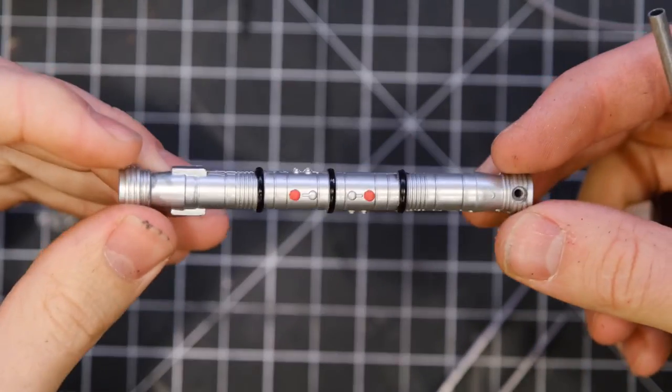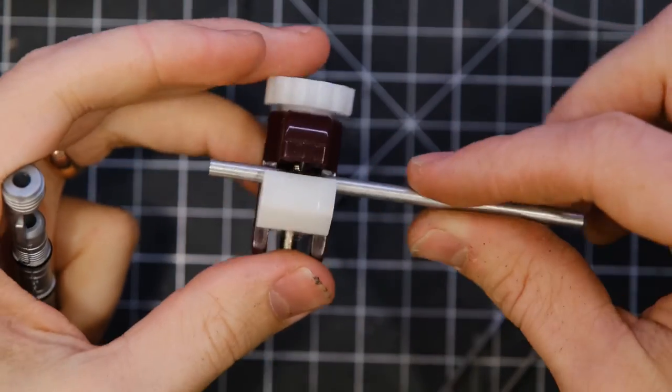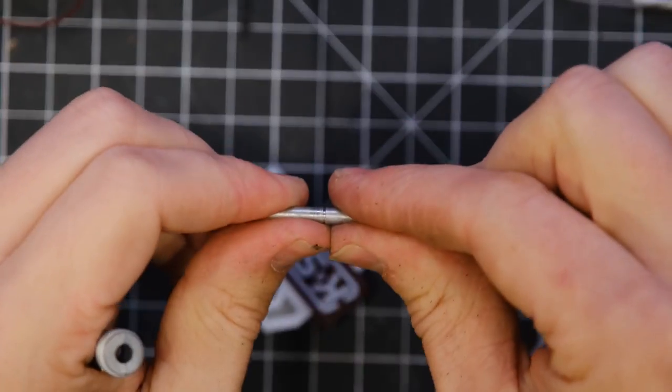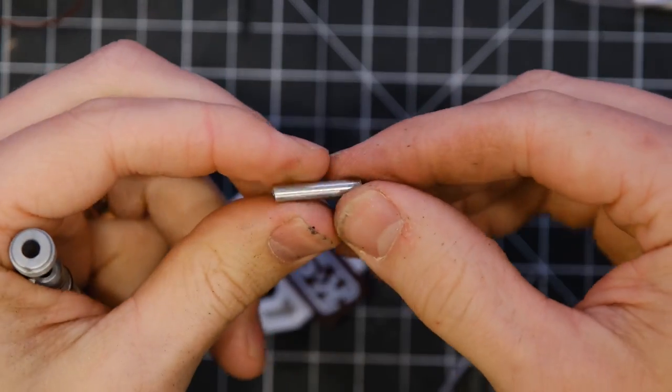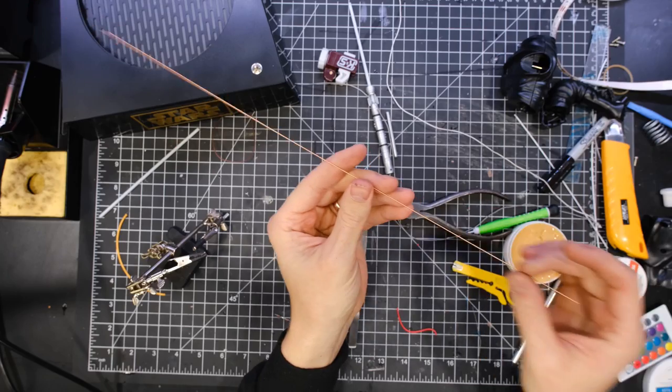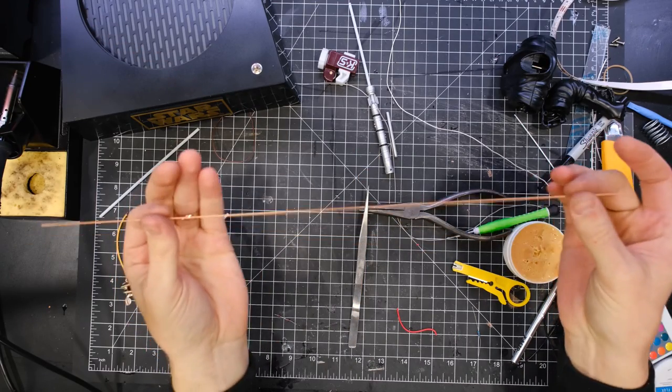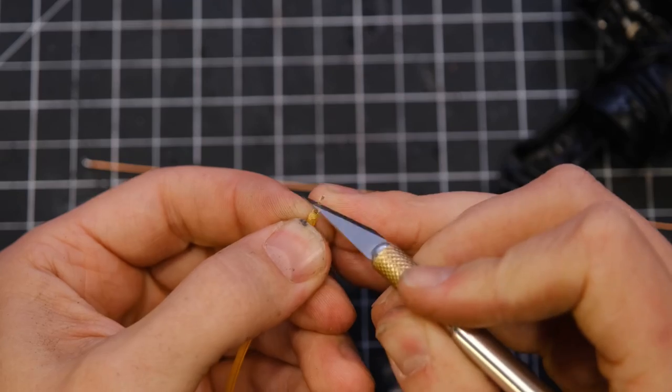The holes on the lightsaber were a little big, so I reduced the size using some metal tubing. I then straightened out some copper wire. This will act as the positive lead that will run to either end of the lightsaber.